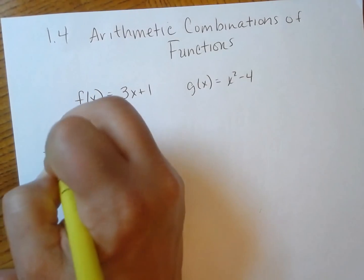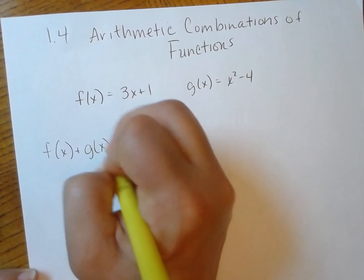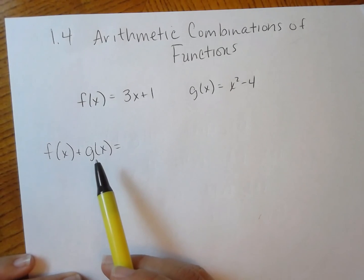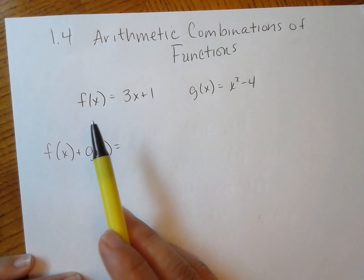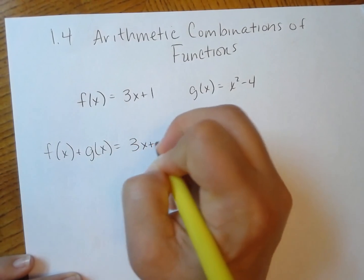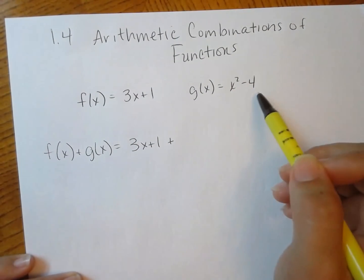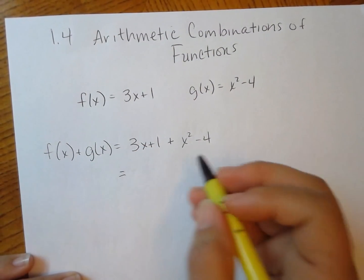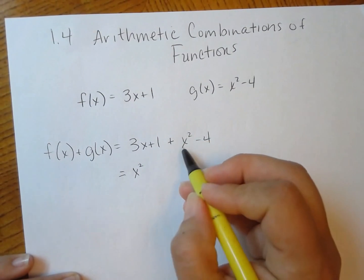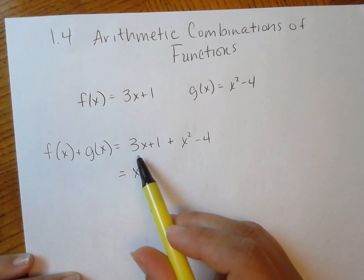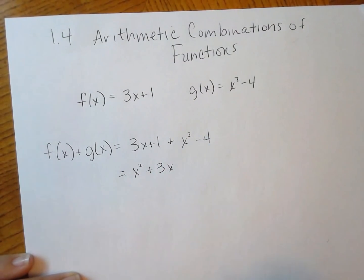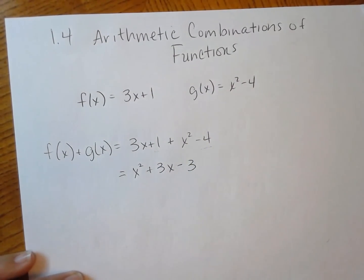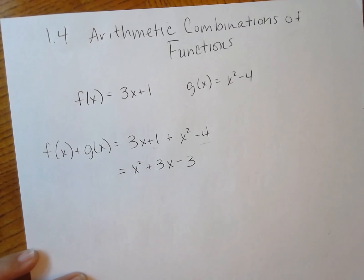For instance, f(x) plus g(x) — I'm going to add f and g. So f is 3x plus 1, and I'm going to add to it g, which is x² minus 4. I can simplify: x² goes in front, I only have one x term so I have 3x, and then 1 and negative 4 combine to give minus 3. So f(x) plus g(x) gives me the new function x² + 3x − 3.